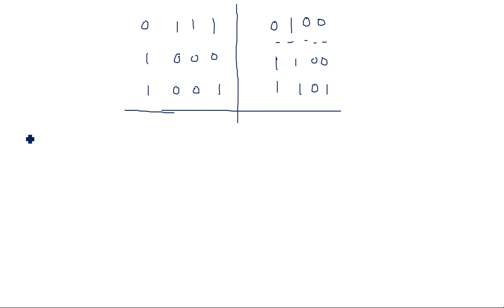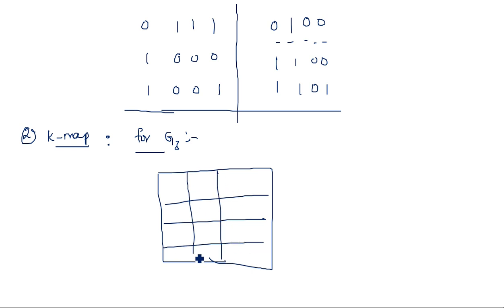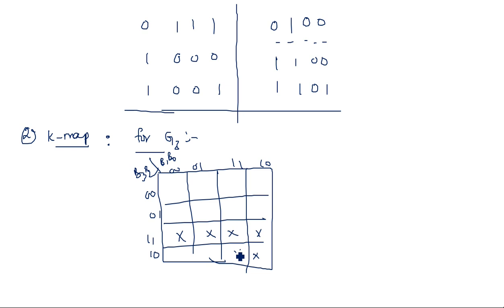To get the output expressions for g3, g2, g1, g0 we use K-maps. The first K-map is for g3, using a four-variable K-map with variables b3, b2, b1, b0. All entries for values 10 through 15 are don't cares since they are not used in BCD format. Mapping this K-map gives the result: g3 is equal to b3.